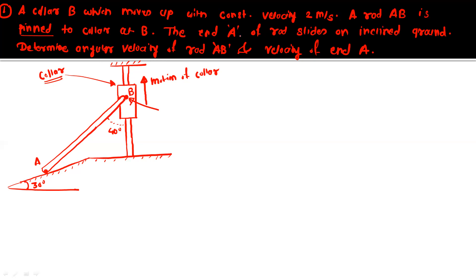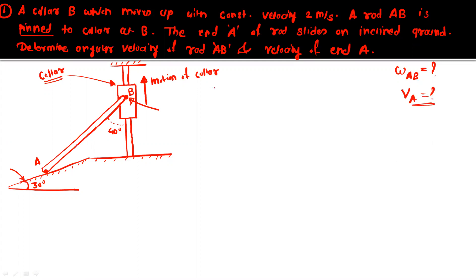The end A of the rod slides on inclined ground with an inclination of 30 degrees. Point A slides on this inclined ground. The question is to determine the angular velocity of rod AB, that is Omega_AB. What is given: the linear velocity of point B (the collar) is VB = 2 meters per second. The collar slides, so it only has translational or reciprocating motion, and point B moves in the upward direction.